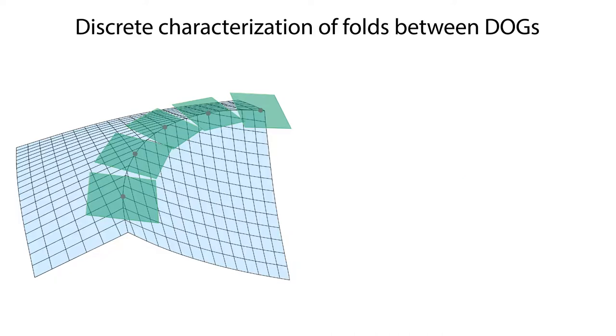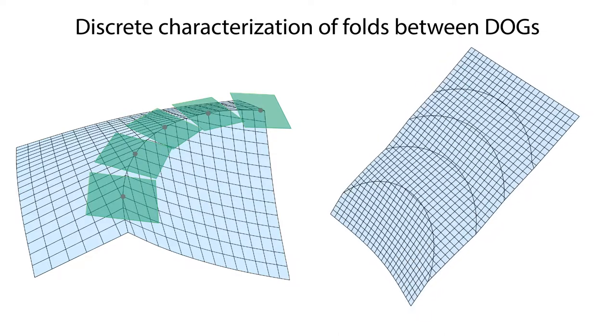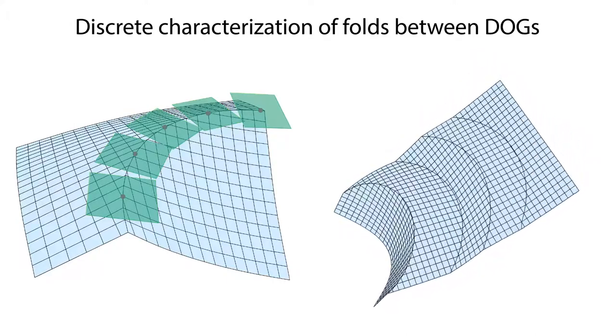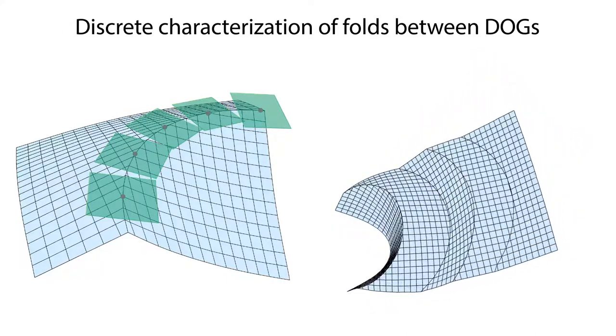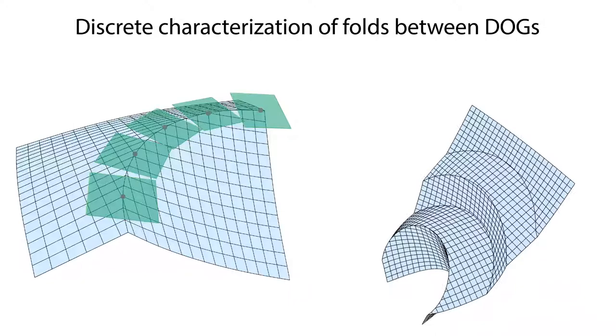Our main contribution is a discrete binary characterization for folds between dogs based on supporting planes along creases. This translates into a simple algorithm to simultaneously fold creases and smoothly bend planar sheets.